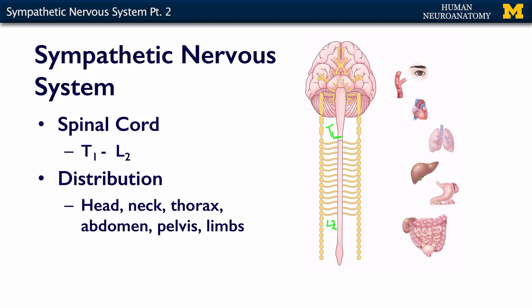You will also notice that even though the cell bodies of origin are restricted, our ganglia are not. We have ganglia that go all the way down into the pelvis, and we have ganglia that go all the way up into our neck.